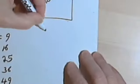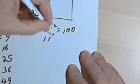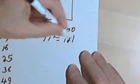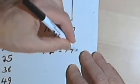Well, I'll move over to here. 10 squared is 100. 11 squared is 121. And 12 squared is 144.